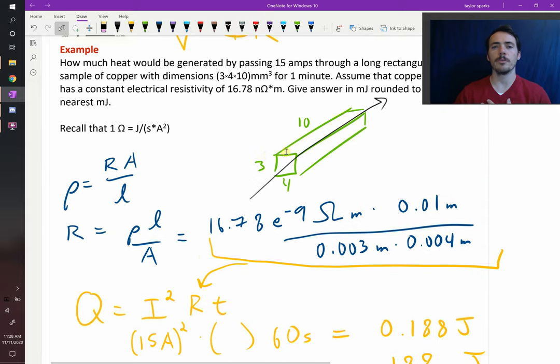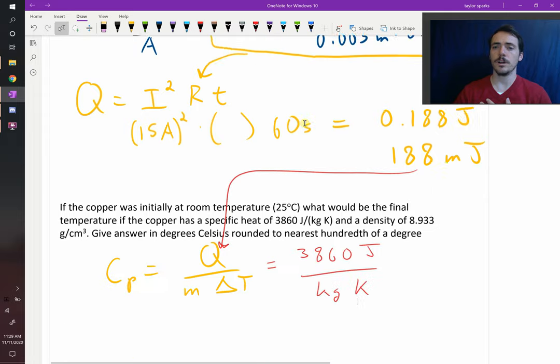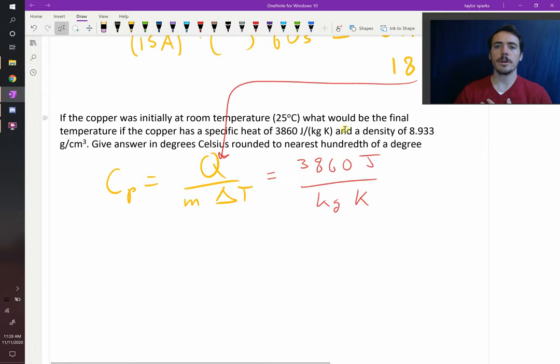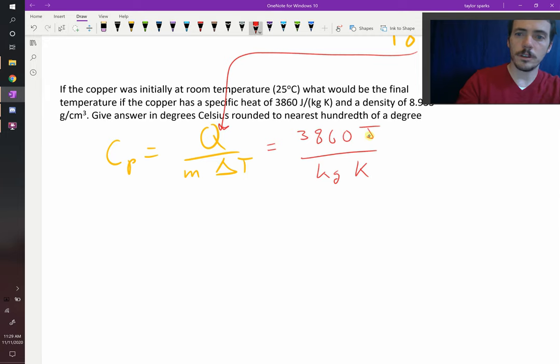We know the specific heat is 3860 joules per kilogram per kelvin. Since this is in kilograms, we need to figure out the mass of our sample, not the number of moles. We can get the mass—we know the dimensions. It's 3 by 4 by 10 millimeters cubed. So we need to convert that to a volume, then we can use the density to get that to a mass. Pretty straightforward. This will be equal to 0.188 joules multiplied by—we're going to take our density and multiply it by our volume. That will give us a mass.